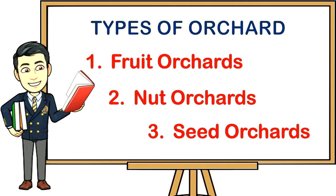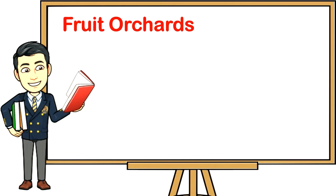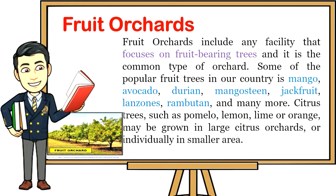Fruit orchards include any facility that focuses on fruit-bearing trees, and it is the most common type of orchard. Some of the popular fruit trees in our country are mango, avocado, durian, mangosteen, jackfruit, lanzones, rambutan, and many more. Citrus trees such as pomelo, lemon, and orange may be grown in large citrus orchards or individually in smaller areas.